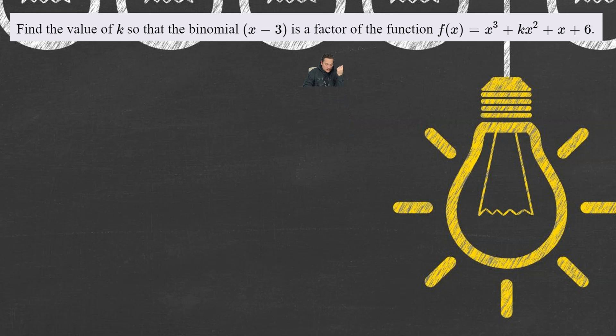Welcome one and all to the Mathemagic Show. In this one we're going to answer the following question. Find the value of k so that the binomial x minus 3 is a factor of the function f(x) equals x cubed plus kx squared plus x plus 6.